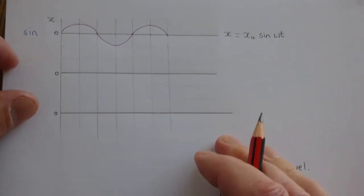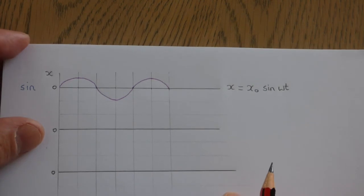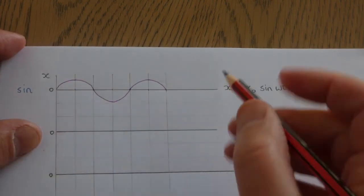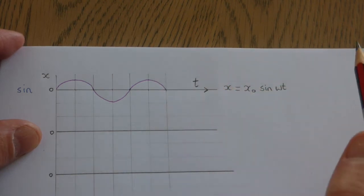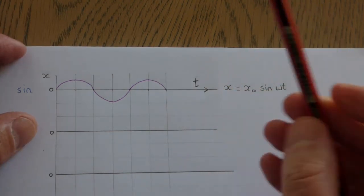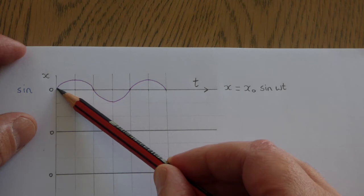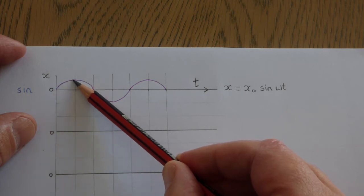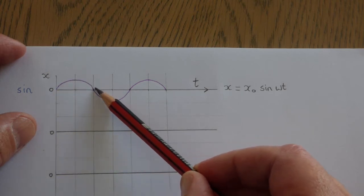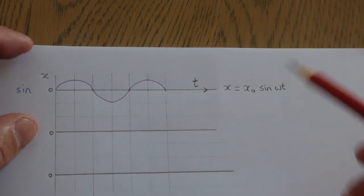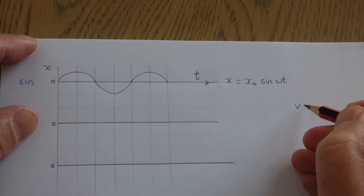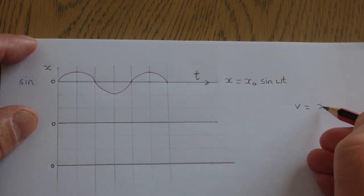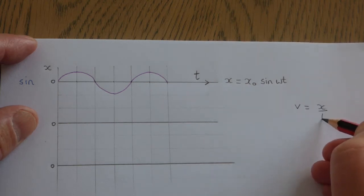The gradient of a displacement-time graph is always going to be the velocity. The difference here compared to GCSE is that the rate at which x is changing keeps changing itself, so it's more complicated. Nevertheless, the idea that velocity is change in displacement divided by time is a very basic one.